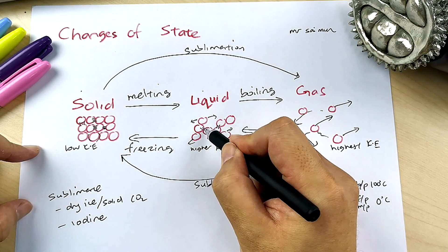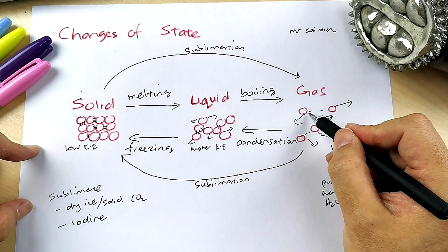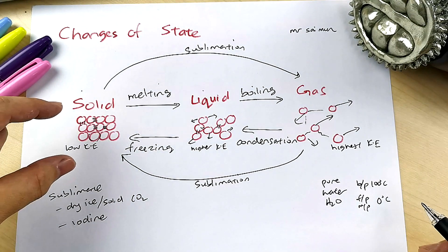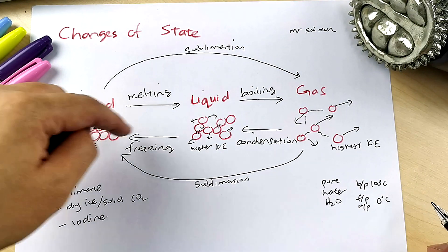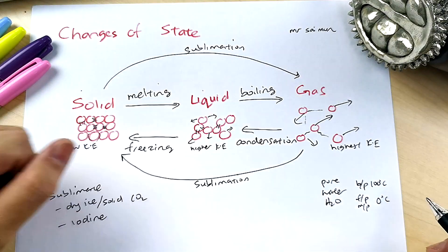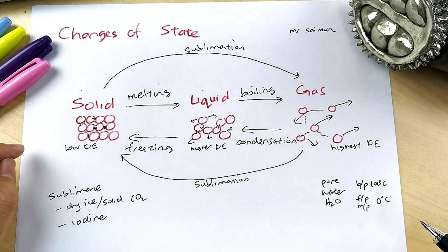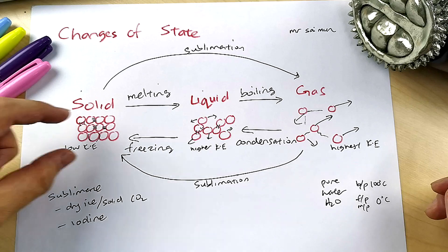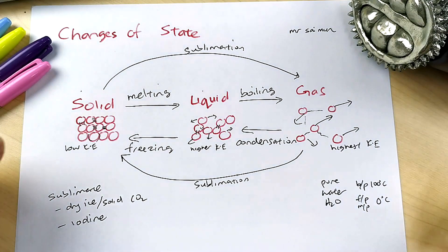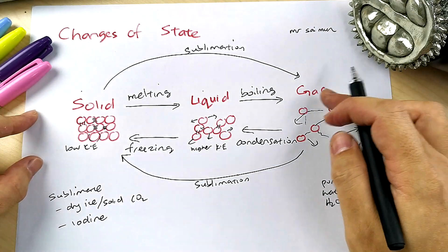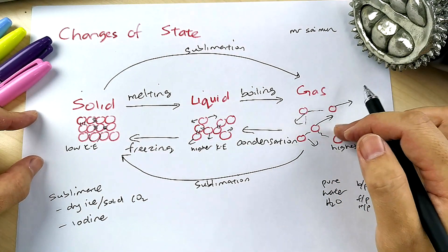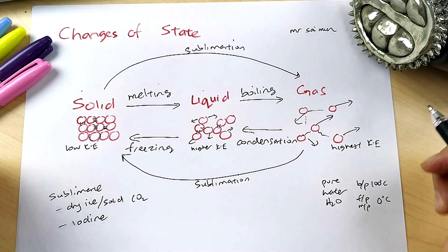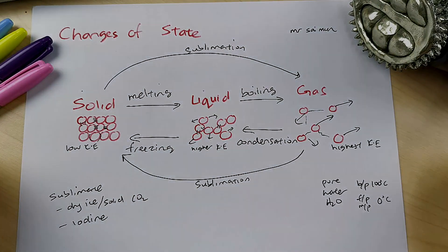Gas has the weakest forces of attraction. When drawing, use three lines for gas, two for liquid, one for solid — usually draw the red color without the black lines, which are just for understanding. So in summary: gas has the highest kinetic energy, and solid has the lowest.